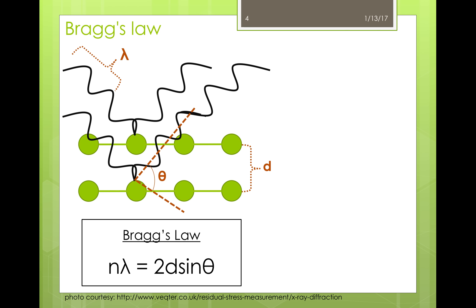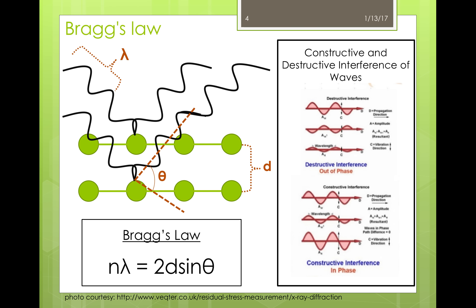Diffracted X-rays interact with each other and can either have constructive or destructive interference. Destructive interference occurs when the waves are out of phase, meaning that the peak of one wave coincides with the peak of an opposite amplitude in the other wave — essentially, the two waves cancel each other out. Constructive interference occurs when the waves are in phase, meaning that the positive peaks of the two waves are aligned and the waves are amplified. Whether or not the X-rays will be constructive during XRD is determined by the material properties of the sample and the angle at which X-rays are applied and detected.